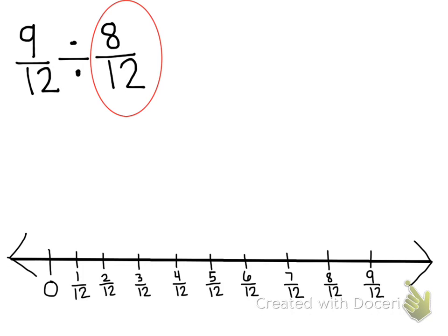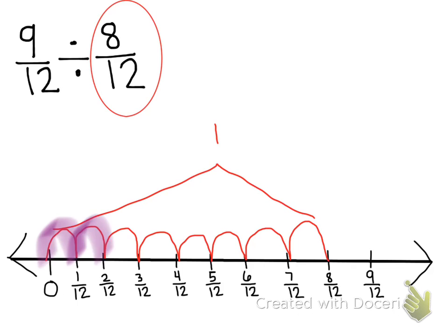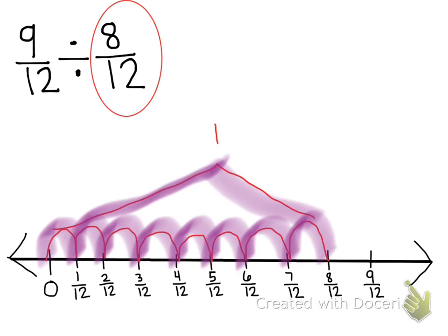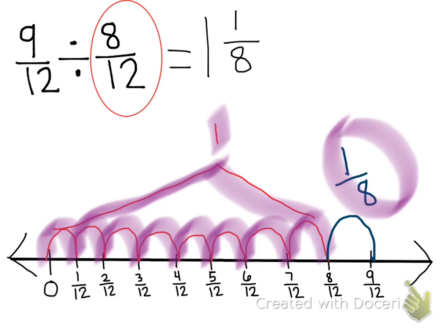And I need to see how many 8 twelfths I can make. So right here, that's 1 group. I know that was fast: 1, 2, 3, 4, 5, 6, 7, 8. That is 1 group. And I only have 1 left out of 8, so that's 1 eighth. So my final answer is 1 and 1 eighth.